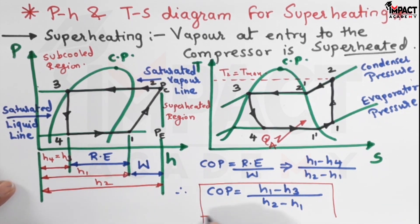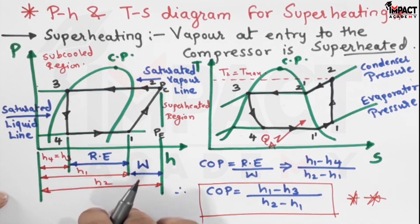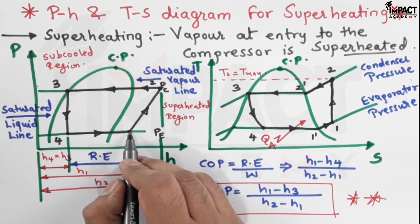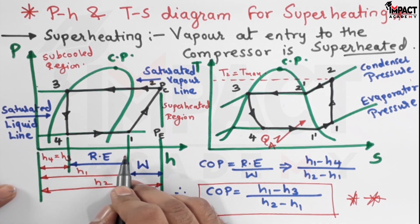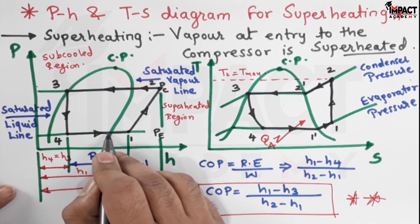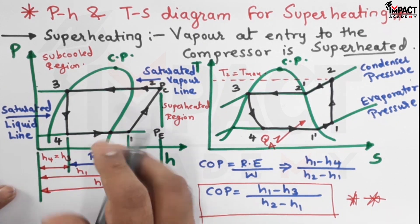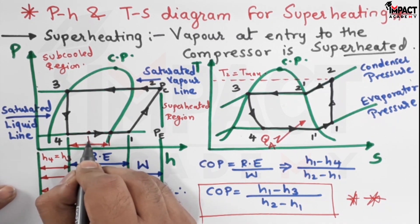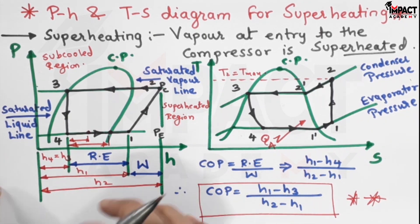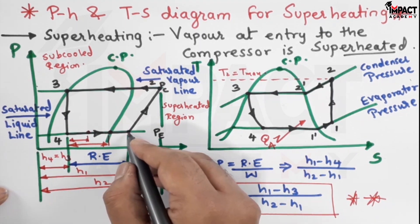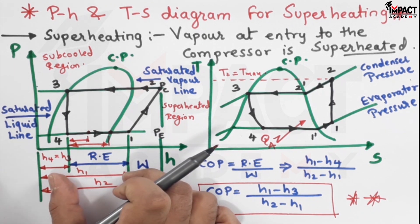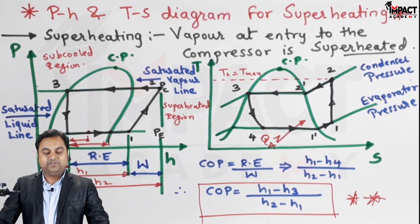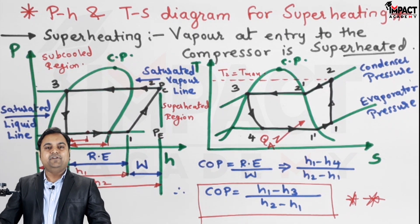From the P-H diagram for the superheated condition, when we send the vapor into the compressor in superheated form, the refrigeration effect increases. If the entry point were on the dry saturated vapor line, the refrigeration effect would be less, and if it were in the wet region, it would be reduced further. So it is clear that when vapor enters the compressor as superheated, the refrigeration effect increases — which is the desired outcome. This concludes the P-H and T-S diagram explanation for superheated vapor.